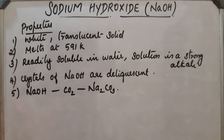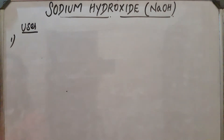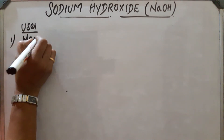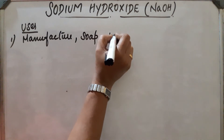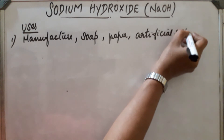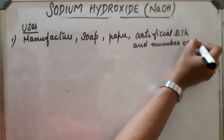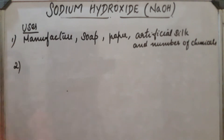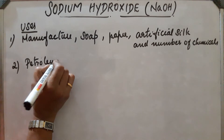Uses of sodium hydroxide: First, it is used in the manufacture of soap, paper industry, artificial silk, and a number of chemicals. Second, it is used in petroleum refining.